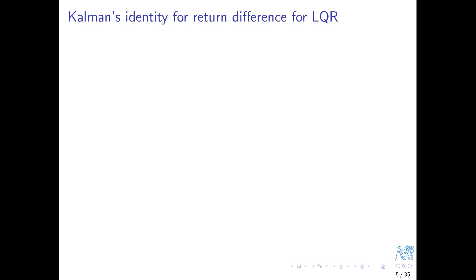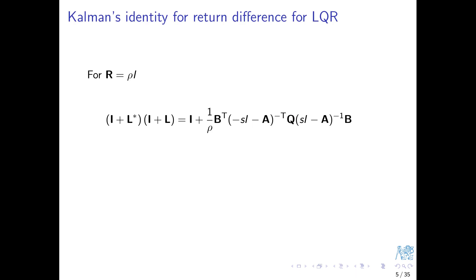Now comes the great result: Kalman's identity for return differences for the LQR problem. I will show the result for the restricted but relevant case where the R matrix is diagonal, parameterized by a single parameter ρ. What we are after is the product (I + L-star)(I + L). We simply want to know how large I + L is on the imaginary axis. I will not show the proof — it's rather technical and can be found elsewhere.